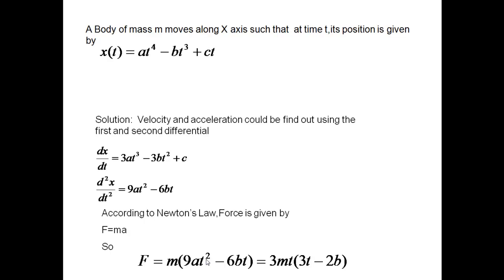A body of mass M moves along the x-axis such that at time T, its position is given by X(T) = A·T⁴ − B·T³ + C·T. Since this is a continuous function-type equation, we have to use differential calculus to resolve it. Velocity is the first derivative and acceleration is the second derivative. Taking the first differential of X(T) we get 3A·T³ − 3B·T² + C for velocity. Taking the second differential we get 9A·T² − 6B·T for acceleration. By Newton's law, force F equals M·A, so substituting: F equals M times (9A·T² − 6B·T), which simplifies to 3M·T·(3A·T − 2B). If you know the concepts and the formulas, this becomes quite easy.